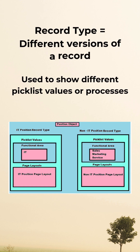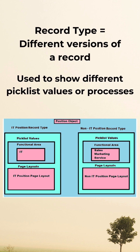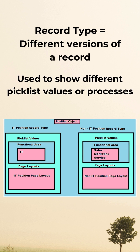A record type lets you create different versions of the same object. For example, we have a position object, and that position is divided into two parts: IT position and non-IT position. The requirement is they want different values for a particular picklist field to be present, which is not possible with the same record type. So they have two different record types — one for the IT position and another for non-IT, giving us an IT position record type and a non-IT position record type.